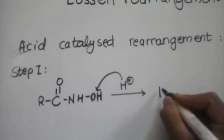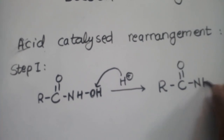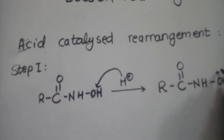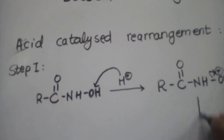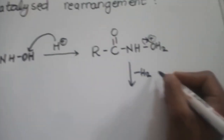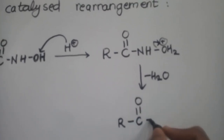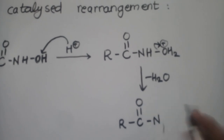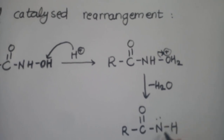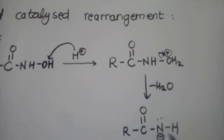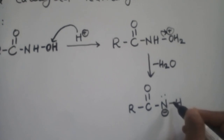We can write this as: R-CO-NH-OH. The oxygen gets a positive charge, and to stabilize this, it takes electrons and removes a water molecule. This completes the first step. Now in the second step, that is deprotonation.